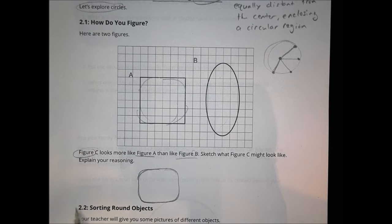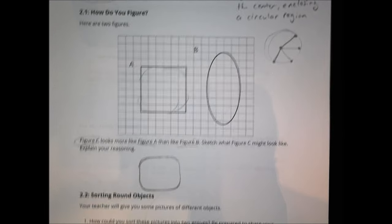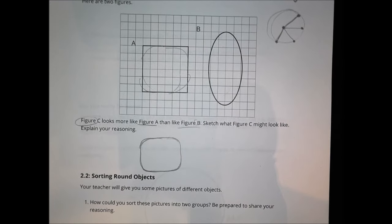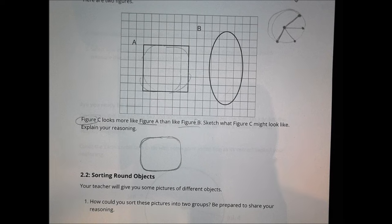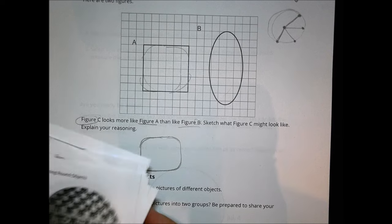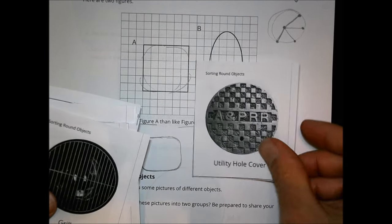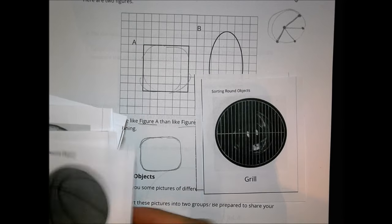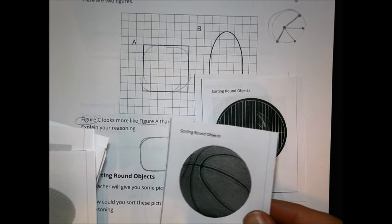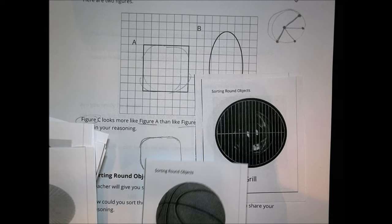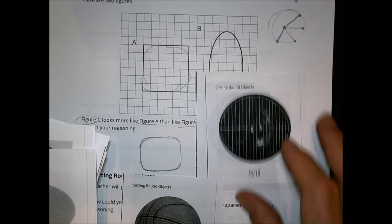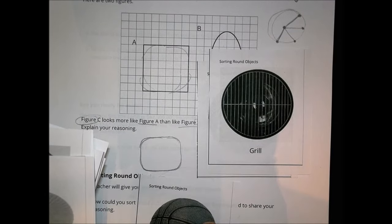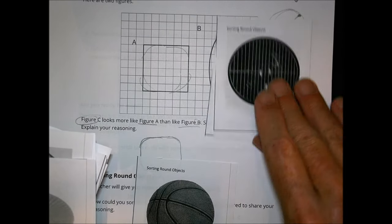You then went into an activity with your classmates about sorting round objects. You were given a variety of objects that you could sort into different groups — things like a utility cover, which looked a little bit more like a circle, a grill that was like a circle, a basketball which is kind of a circle but also more like a globe, a three-dimensional shape.